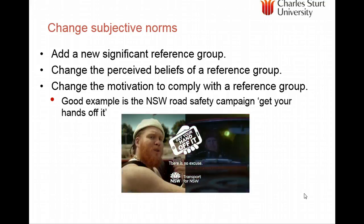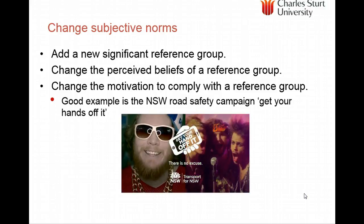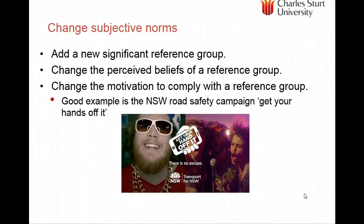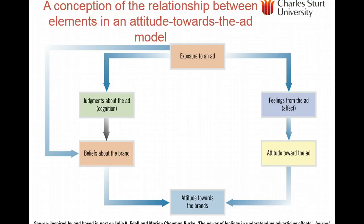There is a version of the ad for different subgroups such as pop, rock, and hip-hop. This is really changing the significant reference groups, changing the belief that this isn't a smart way to behave, and changing the motivation to comply — that this is a really silly thing to do. Interestingly, we like consistency with our attitudes, so the feelings and attitudes towards the ad will link back to the brand or object, because we like consistent attitudes. This is why advertising is such an important way of changing or influencing attitudes towards brands — we call it attitude towards the ad influencing attitude towards the brand.